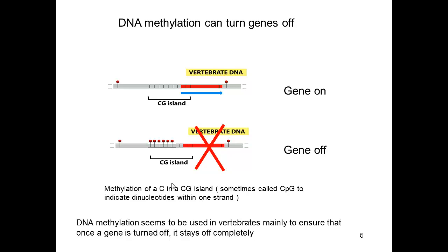Epi means around, so it's not truly genetics — it's not changing the base sequence C, A, G, and T. But what can happen is you can methylate; you can add a methyl group to cytosines. In particular, these enzymes like to methylate the C bases when they occur in a CpG island.